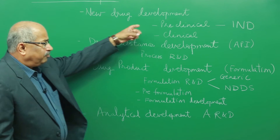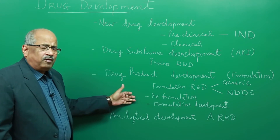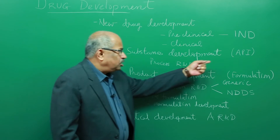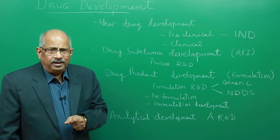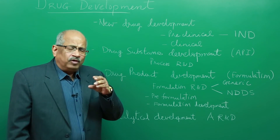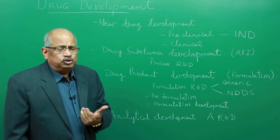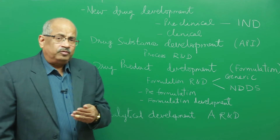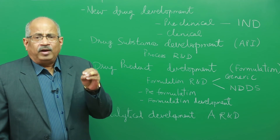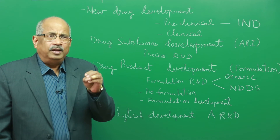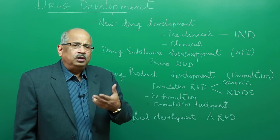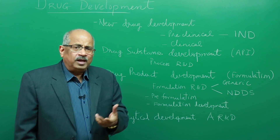If the IND is approved, the molecule enters into the clinical phase of development for testing for the first time in humans. Simultaneously, while a new drug is being developed in the preclinical phase, other aspects of development also come into picture. Part of new drug development includes drug substance development, also referred to as API development. Drug substance is the API — active pharmaceutical ingredient — the chemical molecule being developed as a drug. A good process needs to be developed under good manufacturing practices. The process should be reliable, reproducible, and generate the active pharmaceutical ingredient at a level of purity which is reproducible. A good process would produce quality drug product in a reproducible and cost-effective manner.